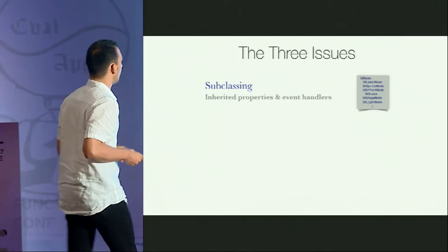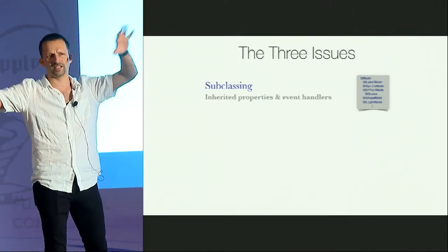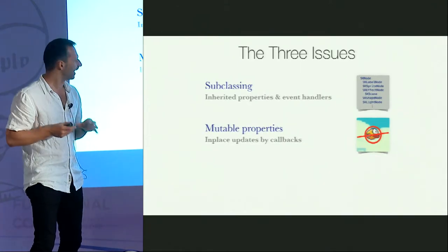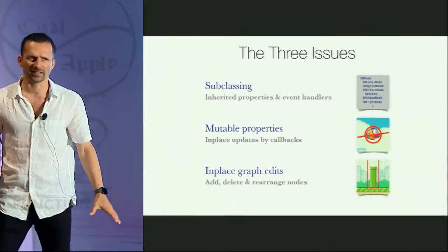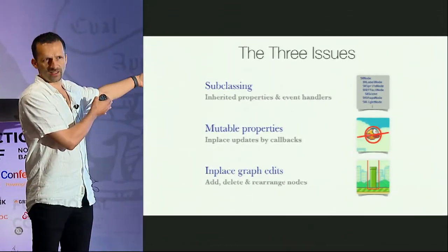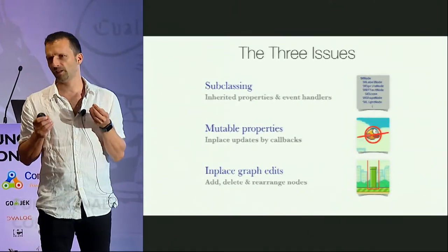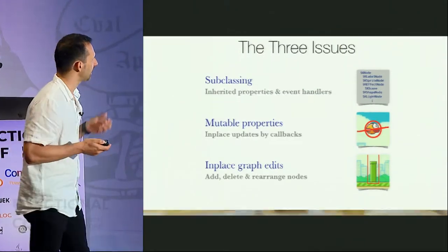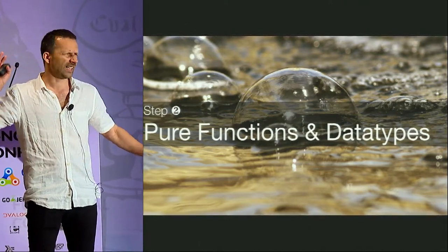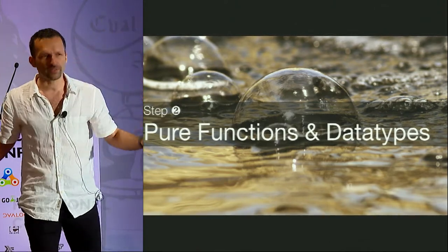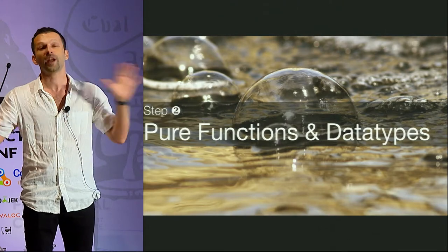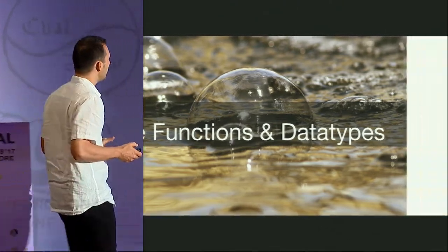So we have three problems: handling the class hierarchy and event handlers; mutating properties which affect visuals; and graph edits happening while everything animates. Now let's look at what we want — our wish API. We'll keep it simple: no complicated state transformers or higher-order gadgetry. Just pure functions and simple algebraic data types — things you have in every functional language.